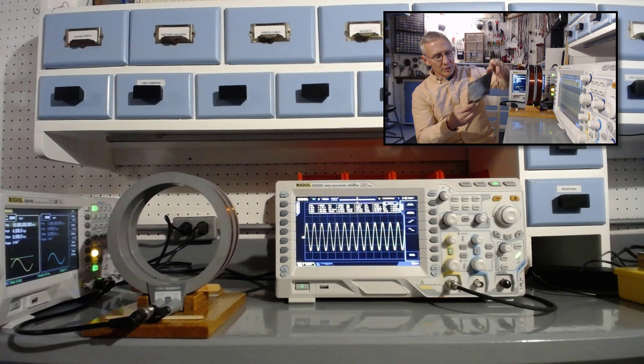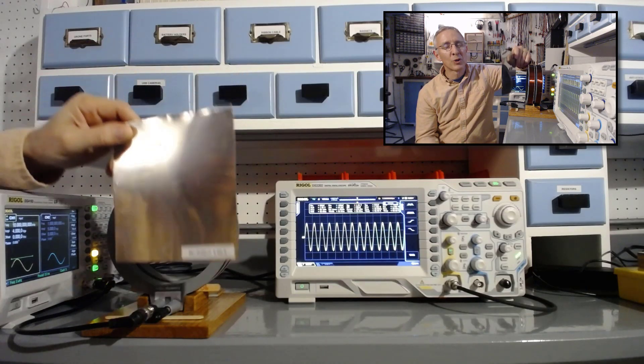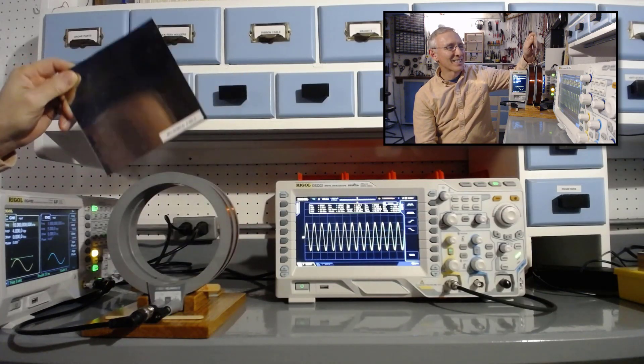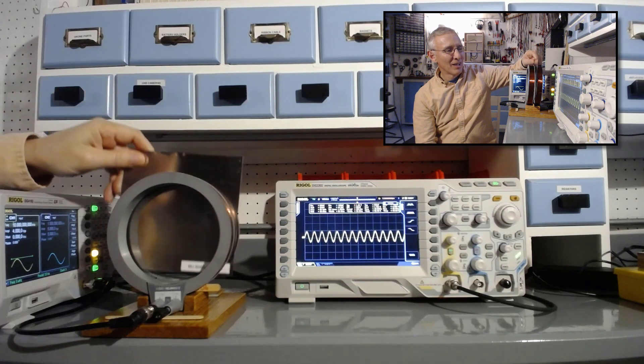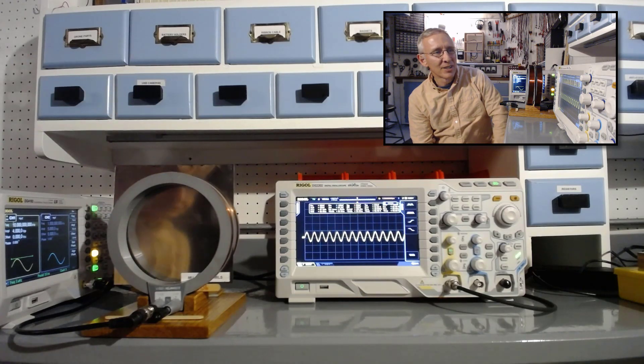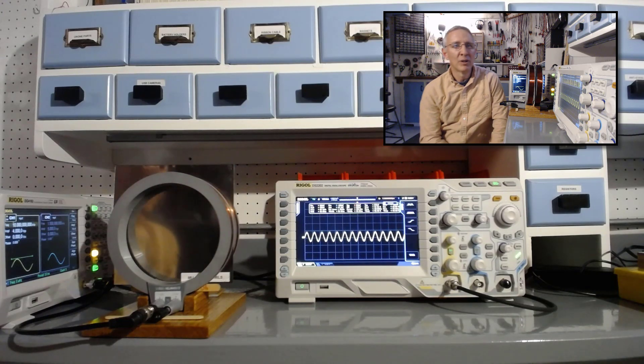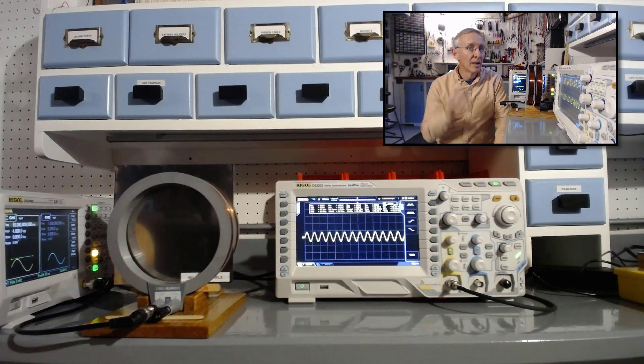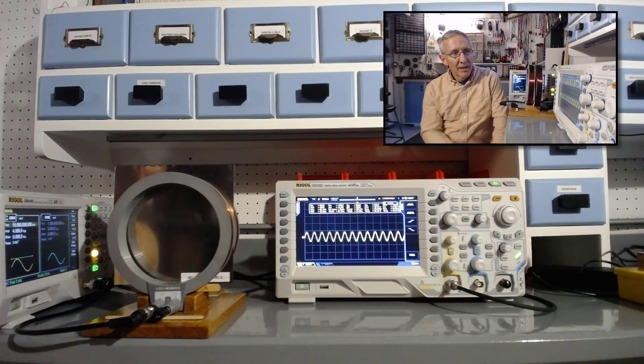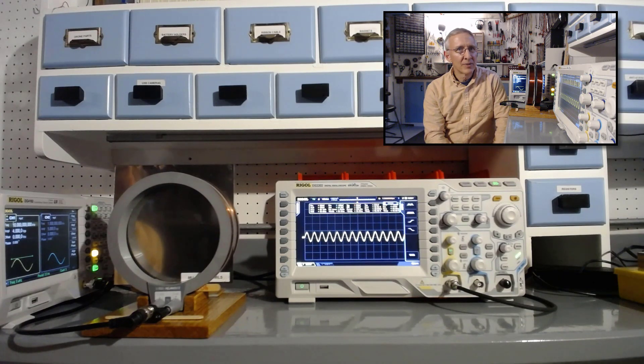Finally we'll look at our mu metal. This worked really well at 60 hertz, and we look at it at 10 kilohertz and we see that, yes, we attenuate down to 880 millivolts, so it's working, but again it's working largely because it has conductivity, it has some conductivity.